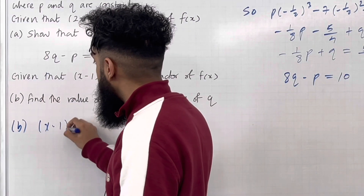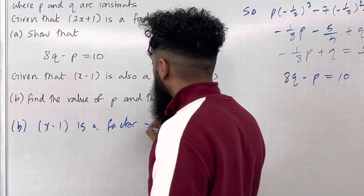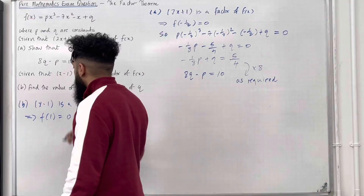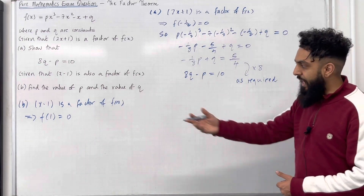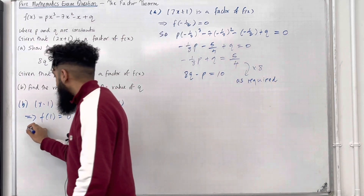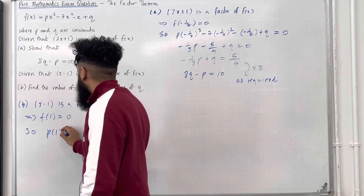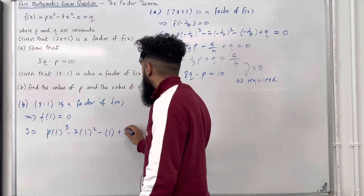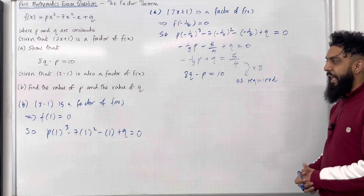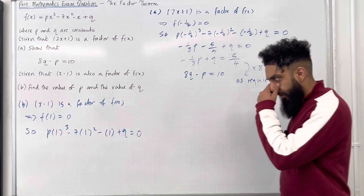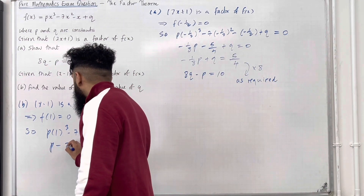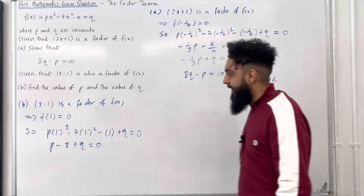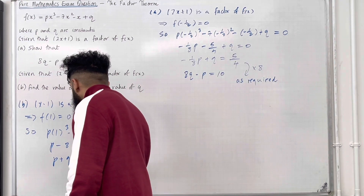Let's have a look at the solution to part b. We know that x minus 1 is a factor of f of x. This implies that f of 1 is equal to 0, using the factor theorem. Substituting x equal 1 into the function f gives p times 1 cubed minus 7 times 1 squared minus 1 plus q equals 0. Simplifying gives p minus 8 plus q equals 0, and taking minus 8 to the right-hand side gives p plus q equals 8.